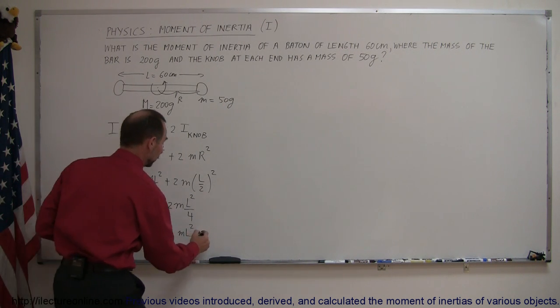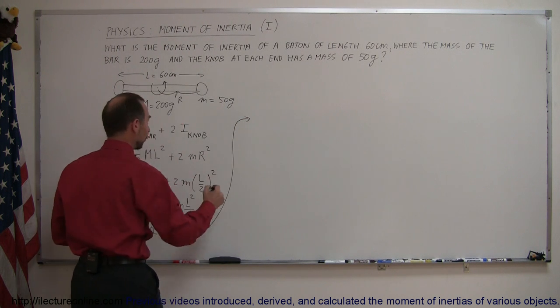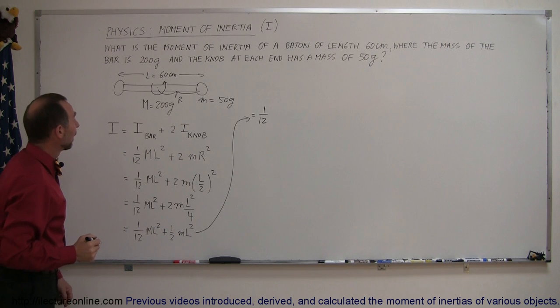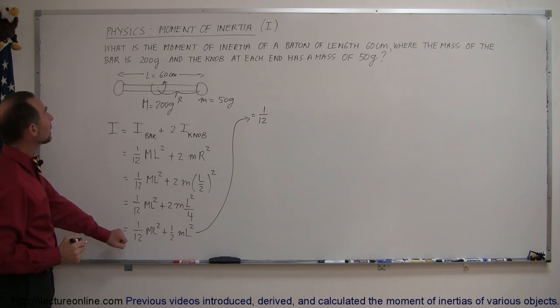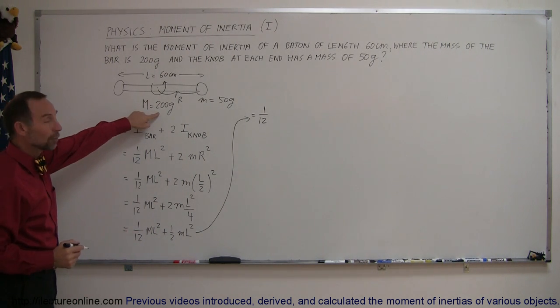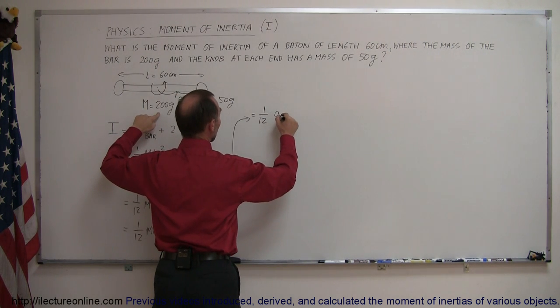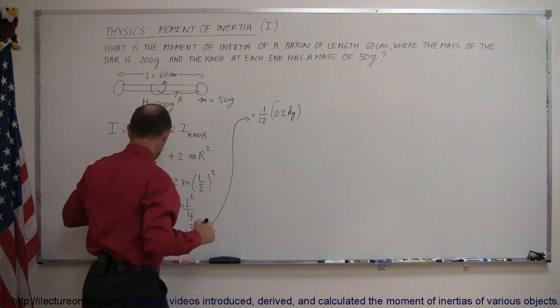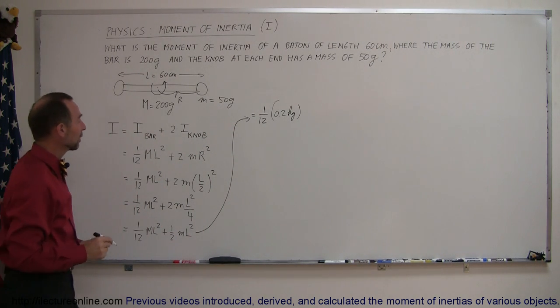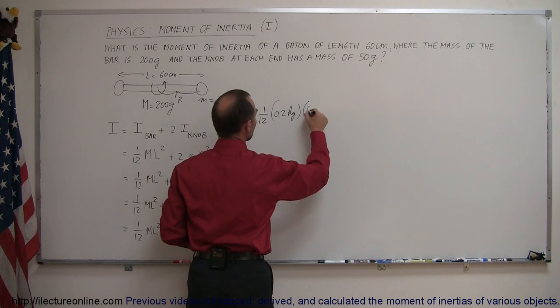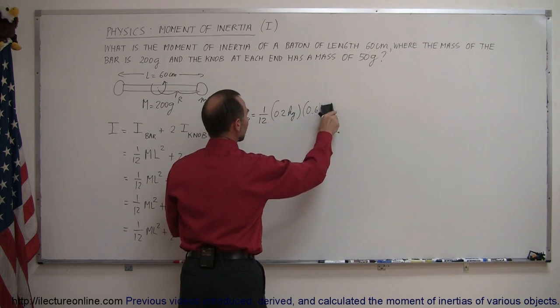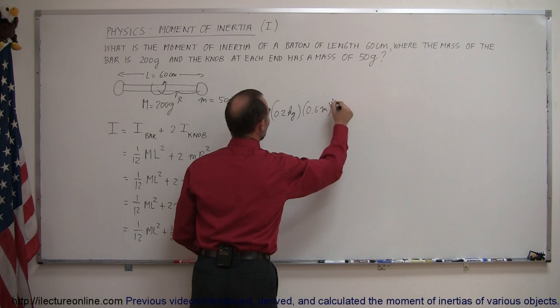And now all we have to do is plug in the numbers. So we have 1/12th, the mass of the bar that's 200 grams converted to kilograms that would be 0.2 kilograms. Always use standard units. And then the length of the bar is 60 centimeters, that would be 0.6 meters. I forgot my units here. Don't want to do that. So meters squared.